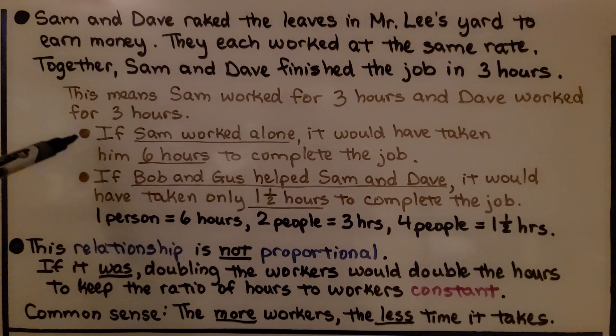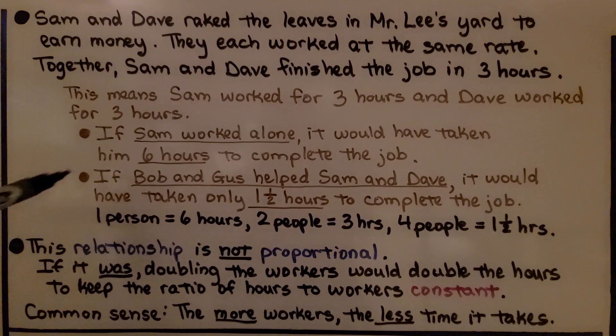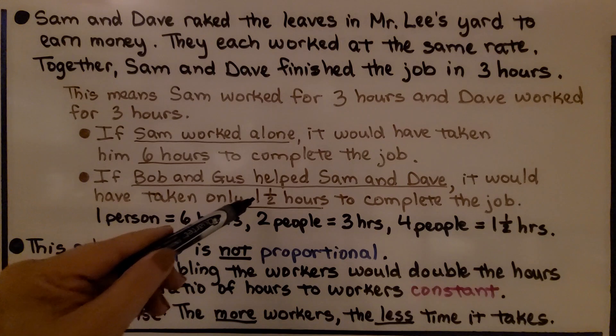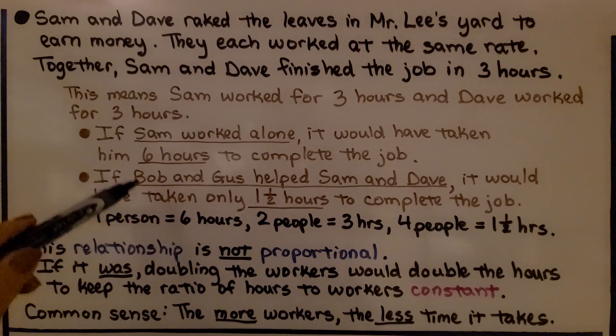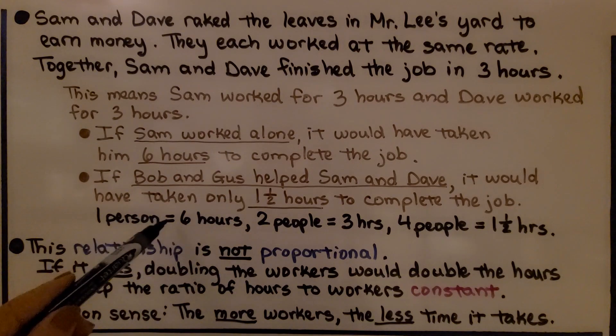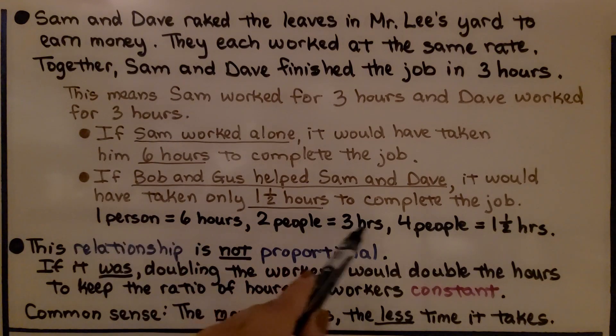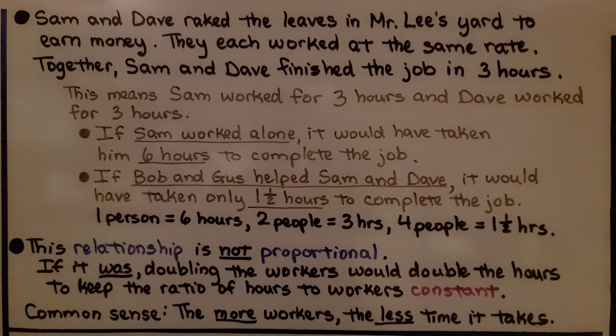If Sam worked alone, it would have taken him 6 hours to complete the job. If Bob and Gus helped Sam and Dave, it would have taken only 1 and a half hours to complete the job. 1 person equals 6 hours, 2 people took 3 hours, 4 people would be 1 and a half hours. This relationship is not proportional.